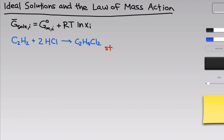To make this discussion clearer, I want to define the concept of the stoichiometric number. The stoichiometric number for a species in a reaction is numerically equal to its stoichiometric coefficient, but we use a negative sign for reactants and a positive sign for products. So for HCl, the stoichiometric number is negative two; for C2H2, it's negative one; and for C2H4Cl2, it's positive one. We're ultimately going to use these as exponents, and using negative signs is convenient because it puts the reactant concentrations in the denominator.